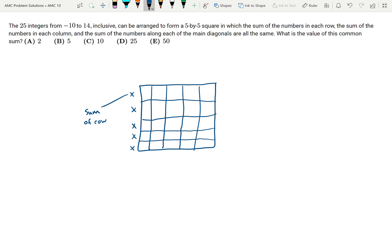If I were to add up all the numbers in all the boxes, that would be adding negative 10 plus negative 9 plus all the way to 9 plus 10 plus 11 plus 12 plus 13 plus 14.